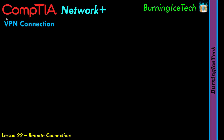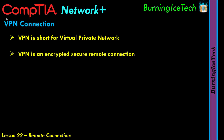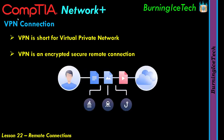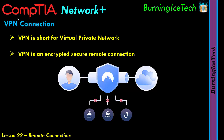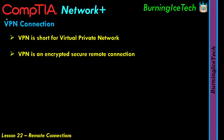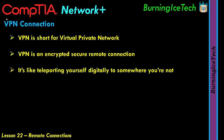So what is a VPN? VPN is short for Virtual Private Network. We know that VPN is an encrypted connection, which is very important — if you're connecting to the office, you ideally want an encrypted connection. If someone willy-nilly is in the middle, we don't want them to intercept this communication and hijack our session or see what communication is occurring. Another thing a VPN connection does is that it's like teleporting yourself digitally somewhere you're not.